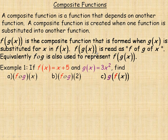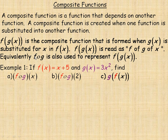This is read as f of g of x, which means you evaluate the g of x — the inside function — first, and whatever value that is, it's then substituted into the f function. Another notation used for this is a small circle between the two functions, written as f∘g, which is also used to represent f of g of x.